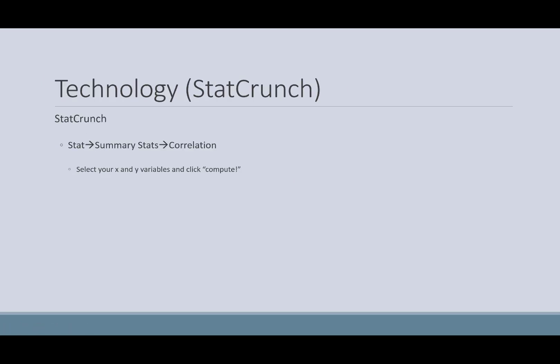Now, as you can see, that took quite a bit of time to hand calculate the correlation, and we were only using four data points, which is not typical. Usually, you're going to have many more data points, so the computations by hand can get quite cumbersome. So what we're going to look at now is how can we do this using StatCrunch.